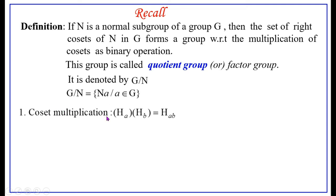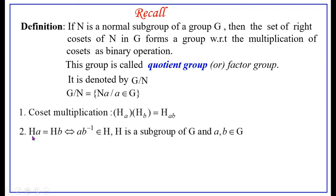The coset multiplication is defined as H_a · H_b = H_{ab}, where H_a is the right coset of H in G generated by a, and H_b is the right coset of H in G generated by b, giving the right coset H_{ab}. Two right cosets of H in G generated by a and b are equal if and only if ab⁻¹ belongs to H, where H is a subgroup of G and a, b are elements of G.